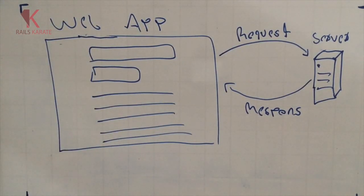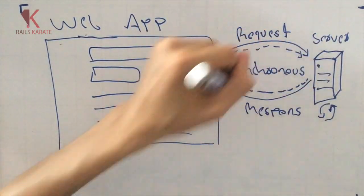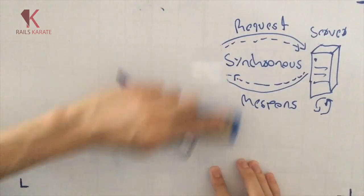The traditional HTTP requests have a big disadvantage in the performance of our applications. This kind of request is synchronous. It means that the user has to wait for the response of the server to keep interacting with the web app.